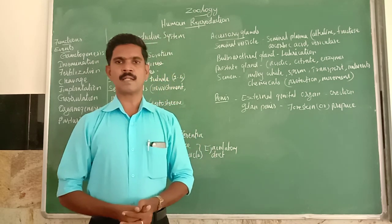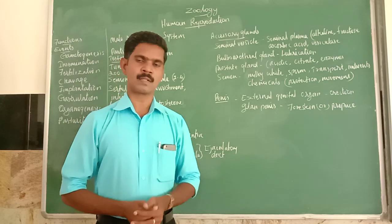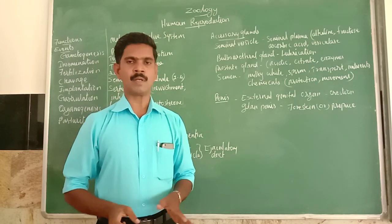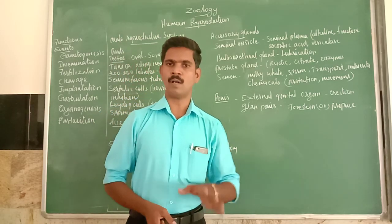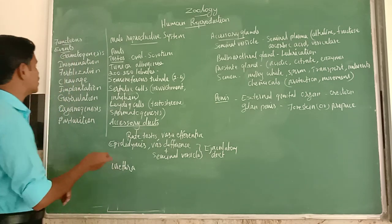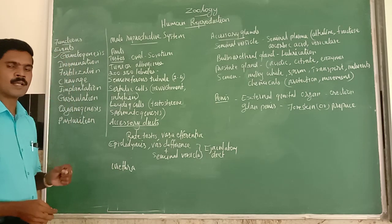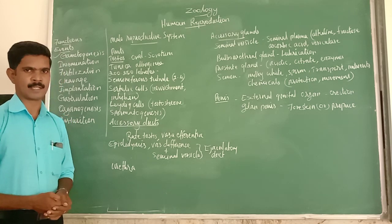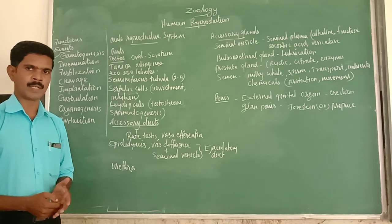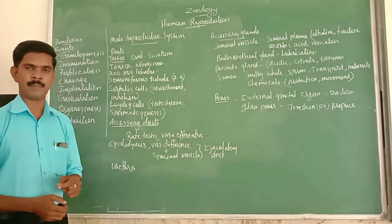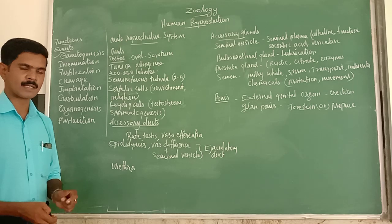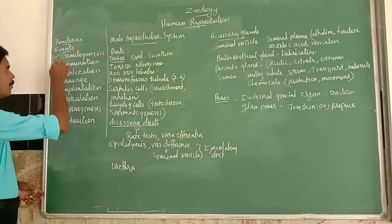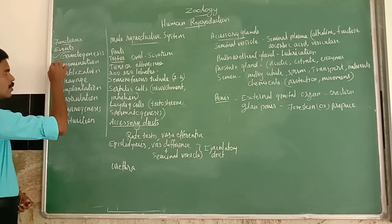Inside the reproductive system, some important events take place in both male and female systems. The first event is gametogenesis — the process of formation of both male and female gametes. The male gamete is called sperm and the female gamete is called egg. The second event is insemination — the process of transmitting the male sex cell into the female reproductive system.